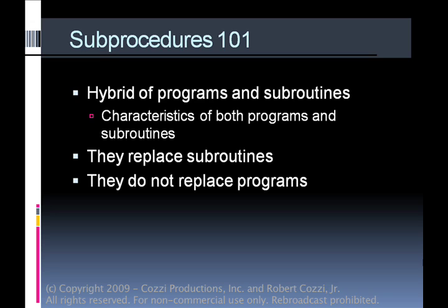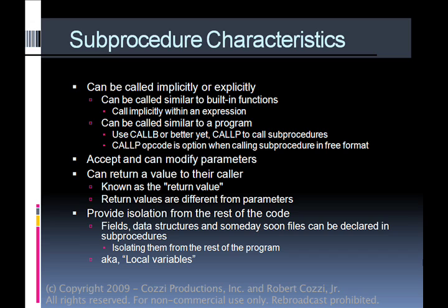Subprocedures are a hybrid of programs and subroutines in that they have characteristics from both. They do replace subroutines, but they do not replace programs. Subprocedures can be called implicitly or explicitly — they're called similar to built-in functions. Within an expression, you can implicitly call a subprocedure. They can also be called similar to a program using the CALLB opcode, or preferably the CALLP opcode, which is used in free format or the extended RPG specification.